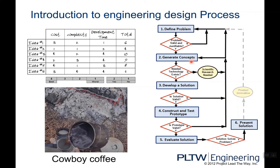The first problem we are facing is where to get the coffee bean. We may purchase it from a farmer, or we can plant our own coffee tree. In order to evaluate which method is better, we need to use the decision matrix. Planting our own coffee tree is more complex and takes a lot of time compared with purchasing coffee beans from a farmer. So our solution is to purchase coffee beans from the farmer.